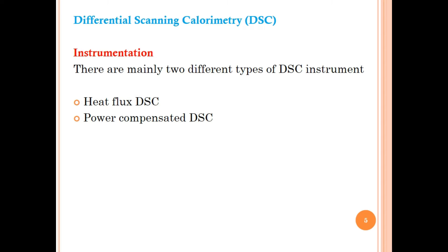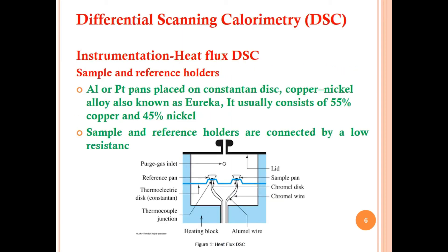Let us discuss the instrumentation of DSC. There are mainly two different types of DSC instruments: heat flux DSC and power compensated DSC. This is a block diagram for DSC — heat flux DSC — showing sample and reference holders, which are parts of the heat flux DSC instrument.